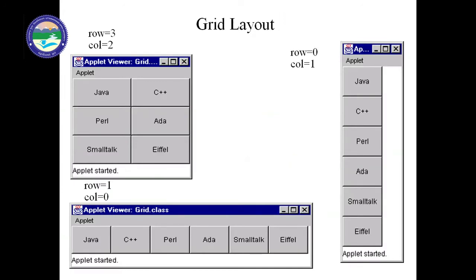In GridLayout, elements are arranged in rows and columns. If we have two rows and two columns with three elements, they are arranged accordingly. If we have only one row with column set to zero, all elements are added in a single row. Similarly, if the row is zero and there is only one column, all elements are added in a single column.